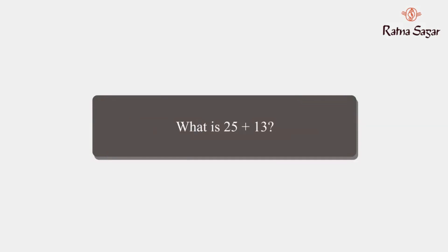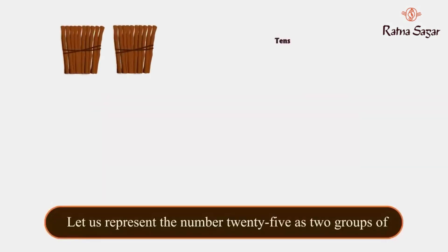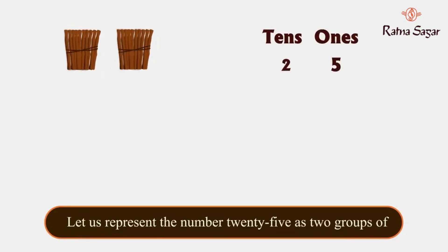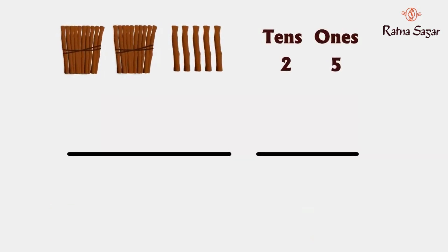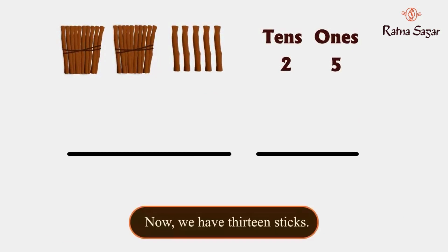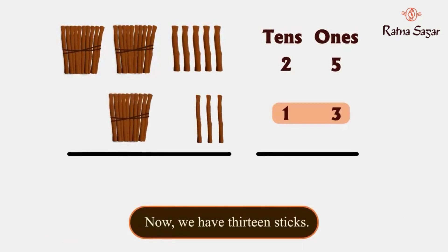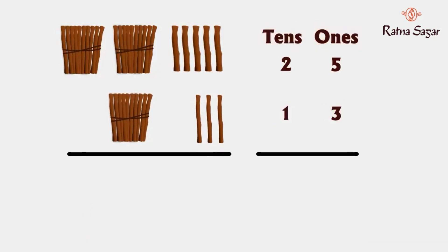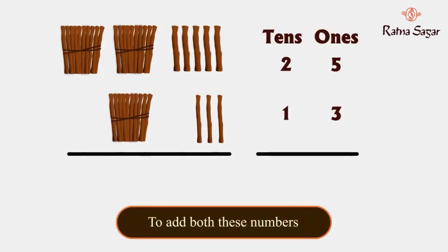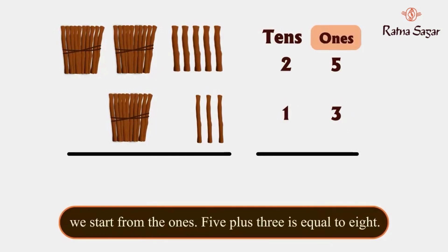Let us try another example: what is 25 plus 13? Let us represent the number 25 as two groups of tens and five loose sticks. Now we have 13 sticks, which means we have three ones and one ten. To add both these numbers, we start from the ones.